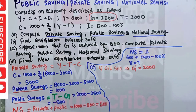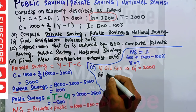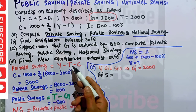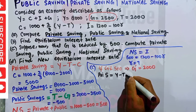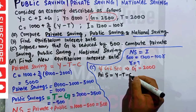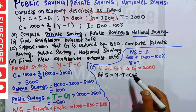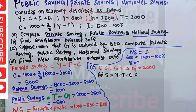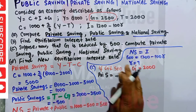Private savings equals Y minus T minus C. Since the government expenditure term does not appear in this equation, reducing government expenditure has no effect on private savings. It remains the same as before.